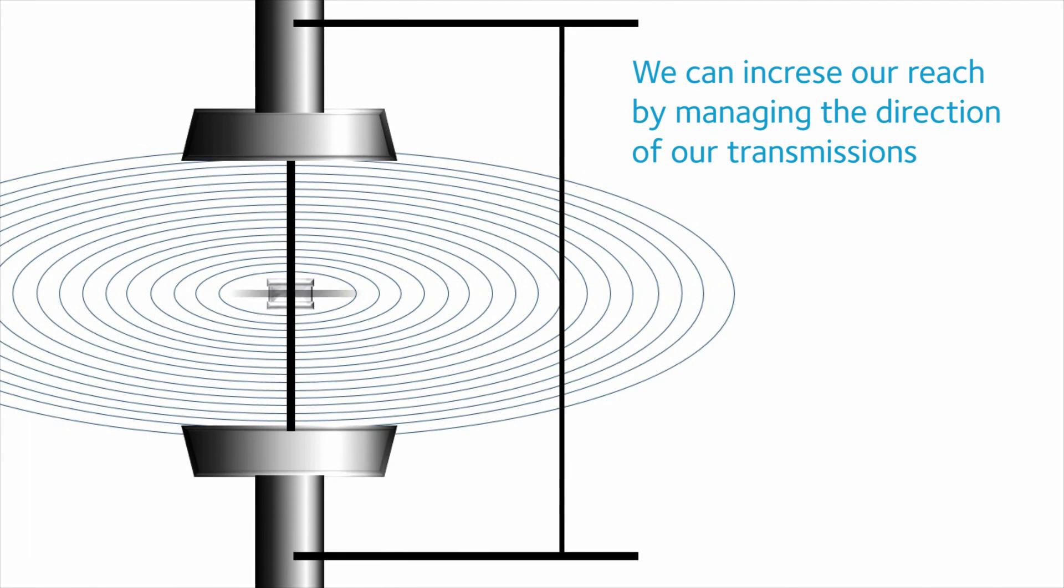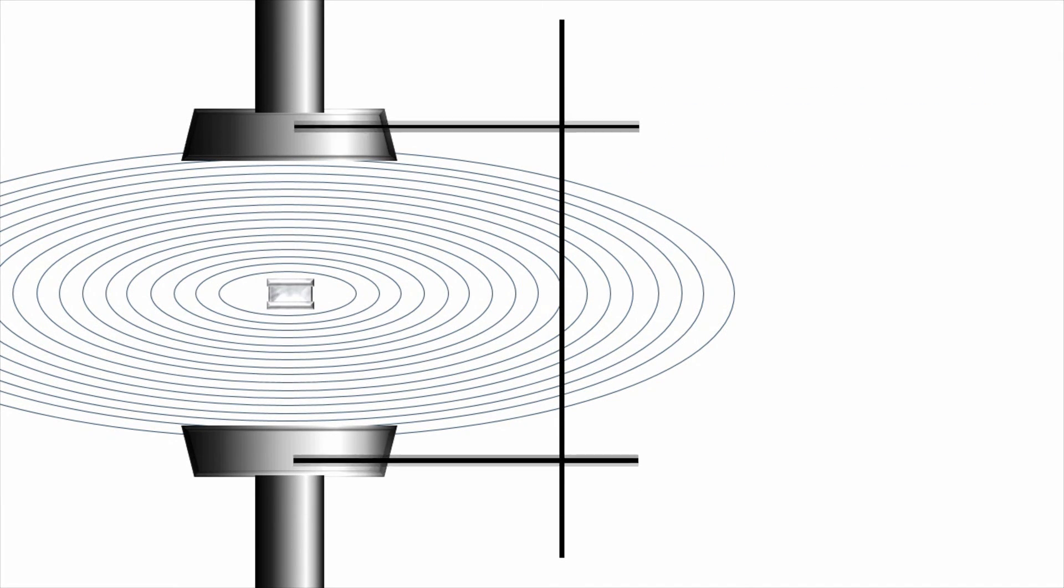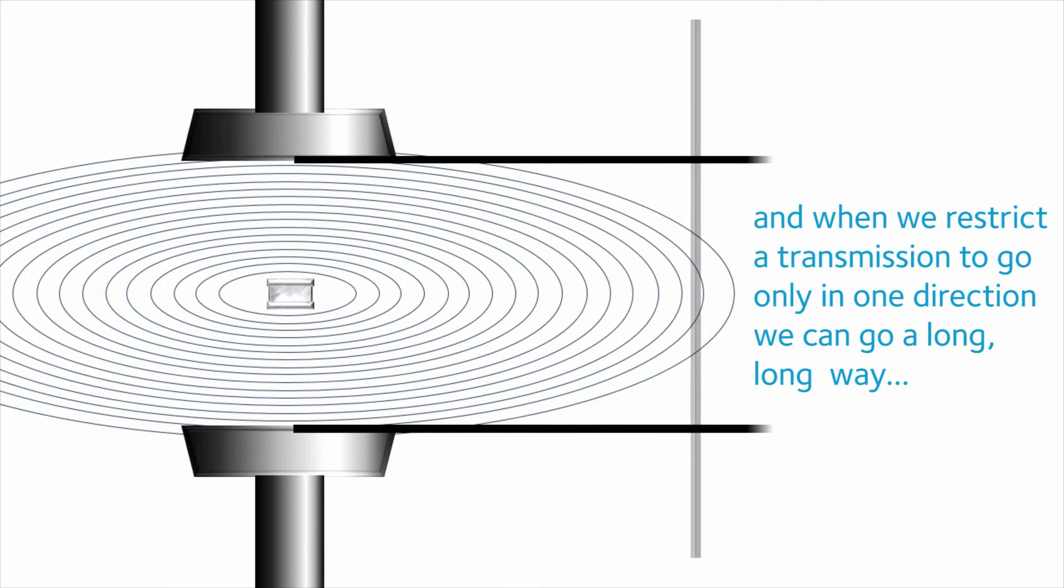So, to have more reach in our transmission, we can produce a gain in our distance by directing the available power of the transmission in a particular direction.